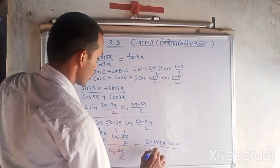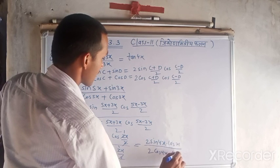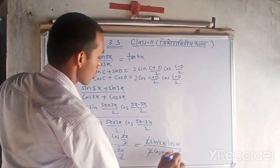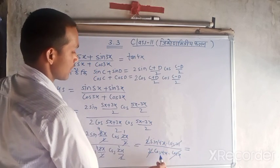2 cancels and cos x cancels. We get sin 4x upon cos 4x, which is tan 4x.